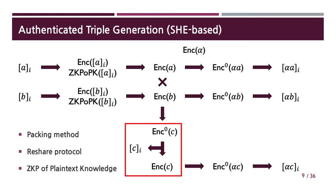So to sum up, the main building blocks of authenticated triple generation and their roles are: first, a packing method enhances amortized performance; second, the reshare protocol allows us to keep down the SHE parameters; and third, ZKPoK, which is the heaviest part, guarantees that the parties honestly generated the ciphertext. As the title of our paper suggests, our protocol, MHZ2K, is a combination of improvements in all three of these building blocks.